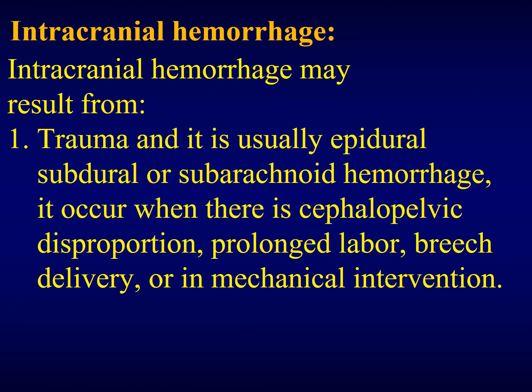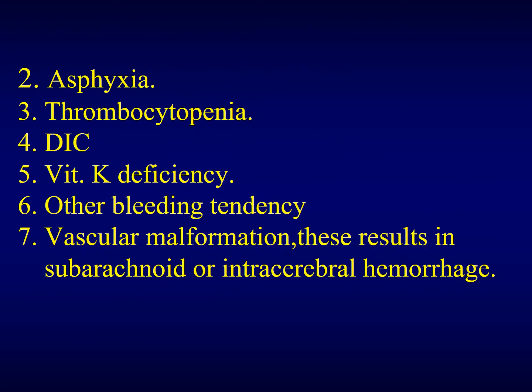Regarding intracranial hemorrhage — a more detailed lecture has been provided separately — it may be epidural, subdural, or subarachnoid. It may occur when there is cephalopelvic disproportion, prolonged labor, breech delivery, or any mechanical interventions, similar to the predisposing factors discussed at the beginning of the lecture. Asphyxia, thrombocytopenia, DIC, vitamin K deficiency, other bleeding tendencies, and vascular malformation may all result in intracranial hemorrhage.